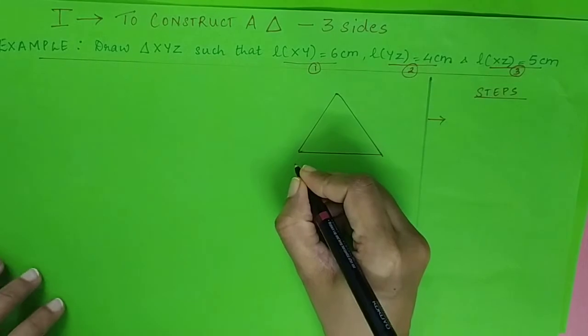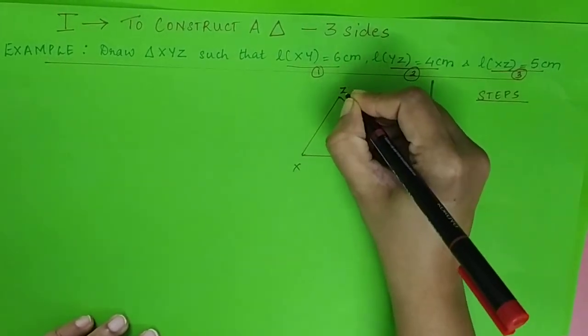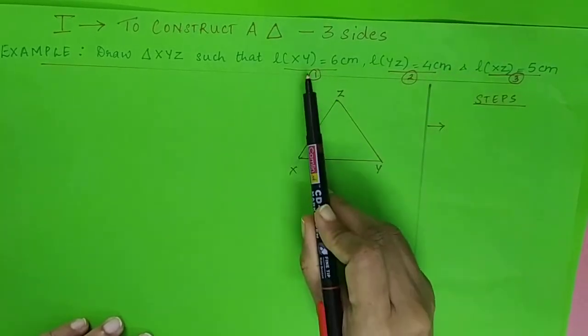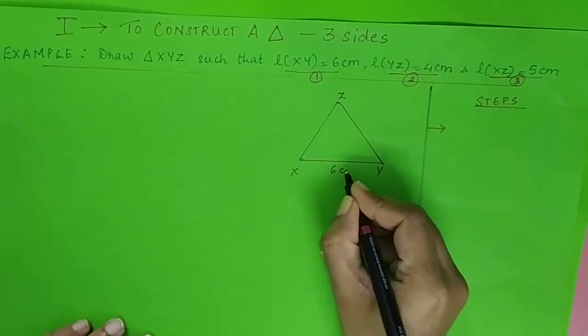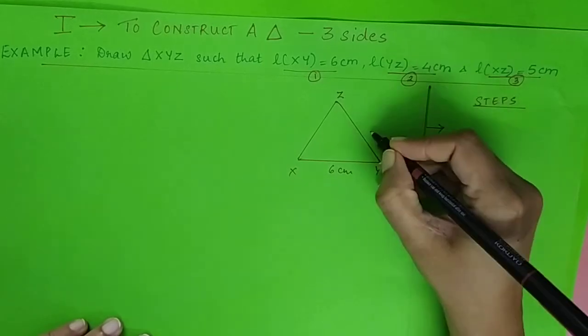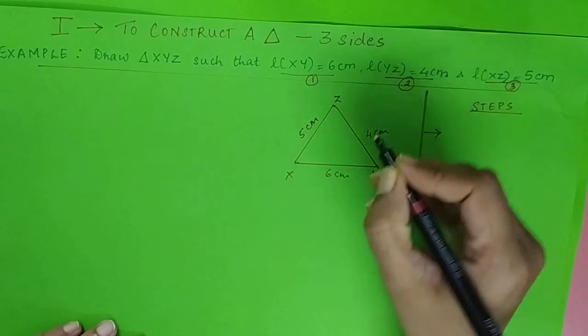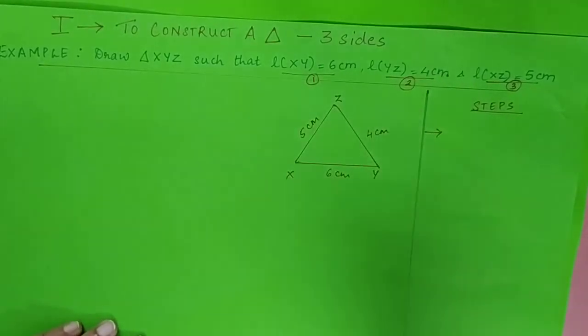You name it XYZ as per the name of the triangle. Now look at the lengths that are given to you: XY is 6 centimeters, YZ is 4 centimeters, and XZ is 5 centimeters. I have written the length of all three sides.